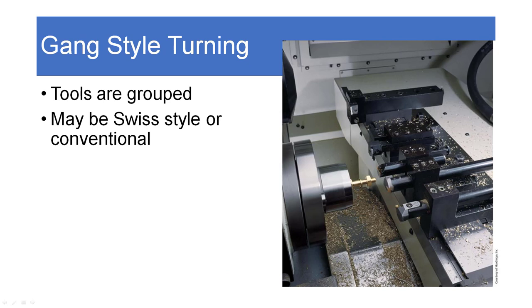Gang style turning is where the tools are literally built up together on a gang — all grouped on one big block, as shown on the right-hand side. It may be in a Swiss style where the tools are fixed, or a conventional style where the tools move. That block can move back and forth, and may move in or out depending on whether it's a conventional or Swiss turning machine.